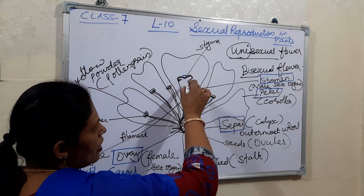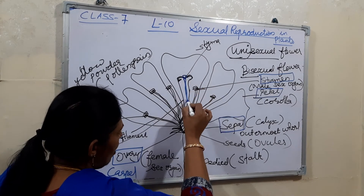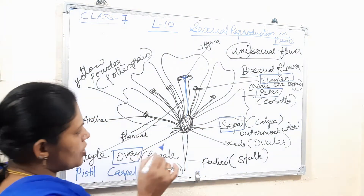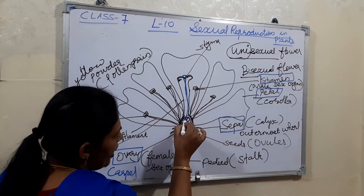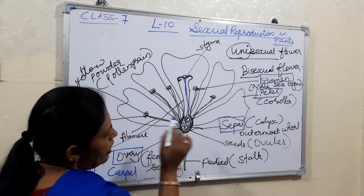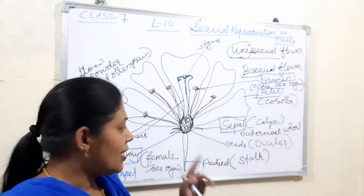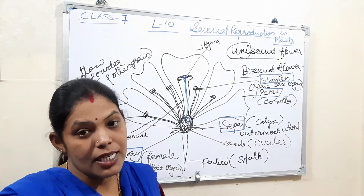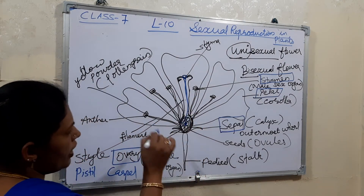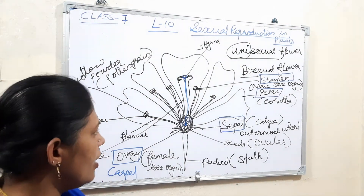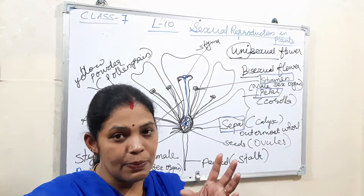The pollen grains fall onto the stigma. Through the elongated style tube the pollen grains travel down into the ovary, which contains the ovules — the eggs. When the pollen grains reach the ovules there is a union — fertilization occurs, producing new cells. After fertilization the ovary becomes a fruit, and inside the fruit the seeds are present.